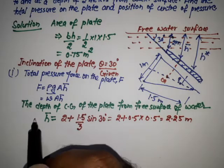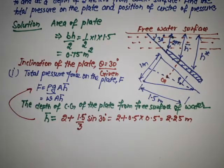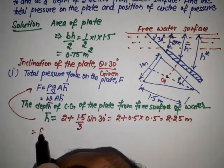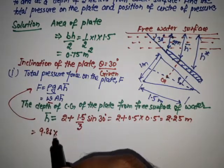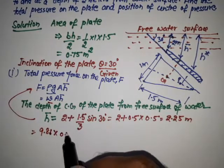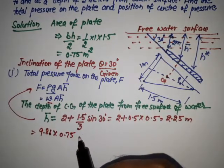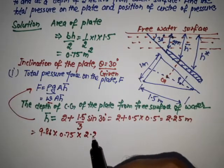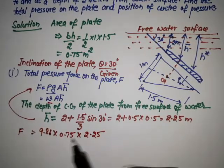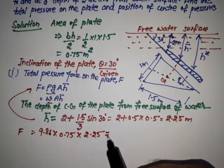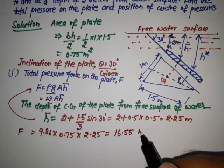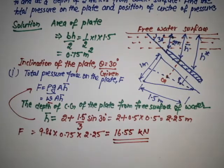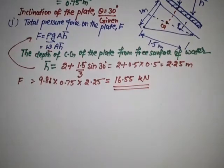Substituting this value into the equation: F = 9.81 × 0.75 × 2.25, which gives us F = 16.55 kilonewtons. This is the total pressure force on the plate.